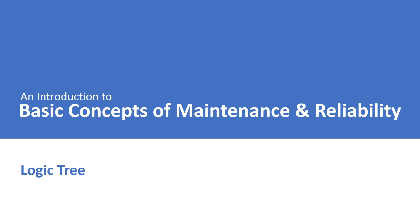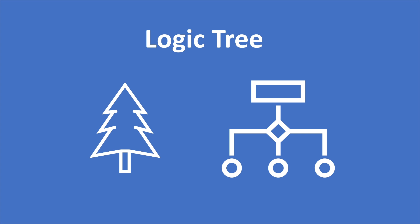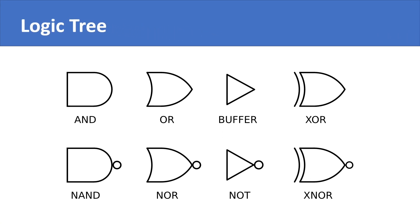Logic Tree is a graphical problem-solving method that uses a set of symbols and shapes to create a tree of logic. The reason it is called a logic tree is because it involves Boolean logic that you would have studied in your high school algebra. The Boolean logic is characterized by different logic gates that are used in the logic tree.